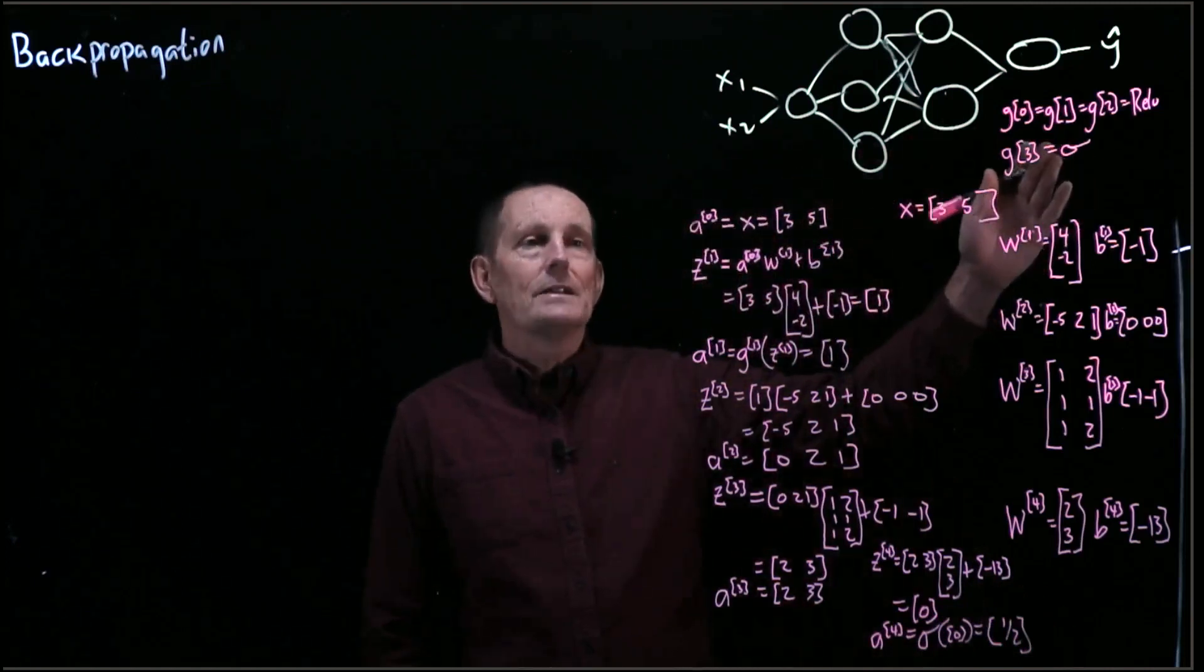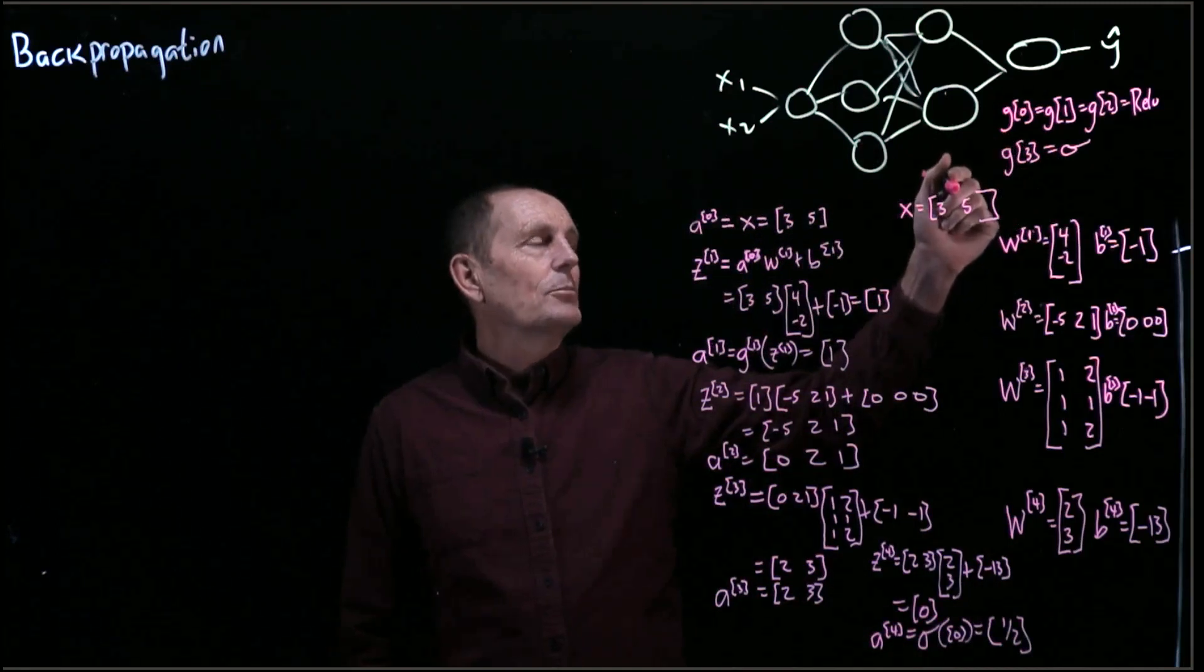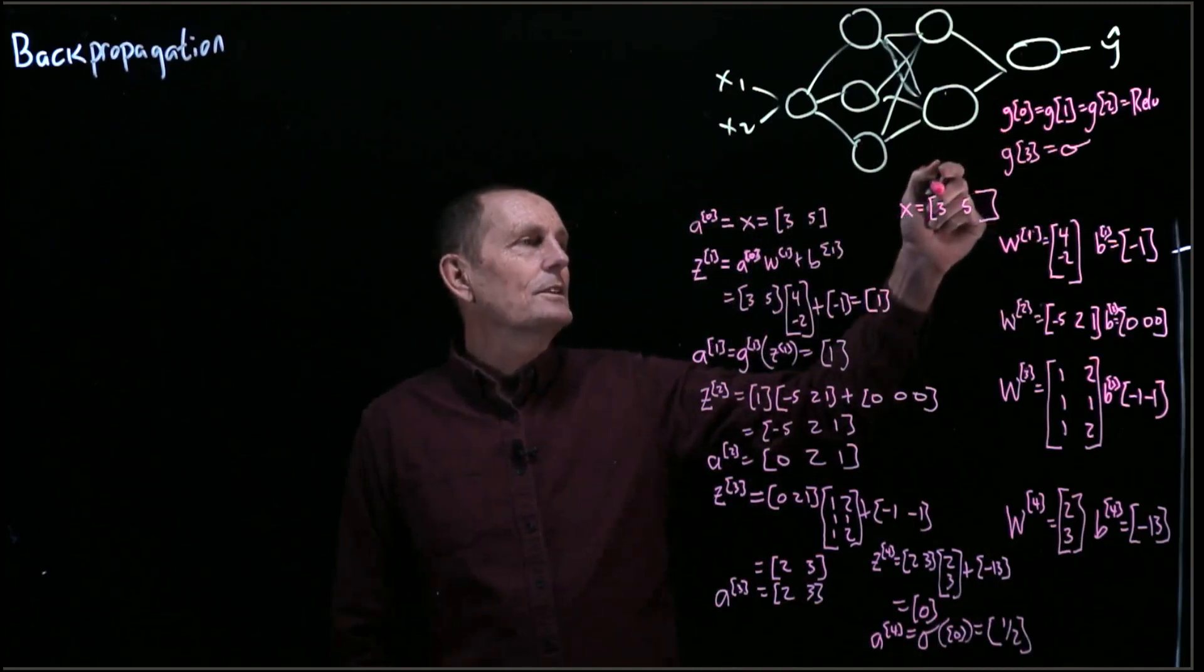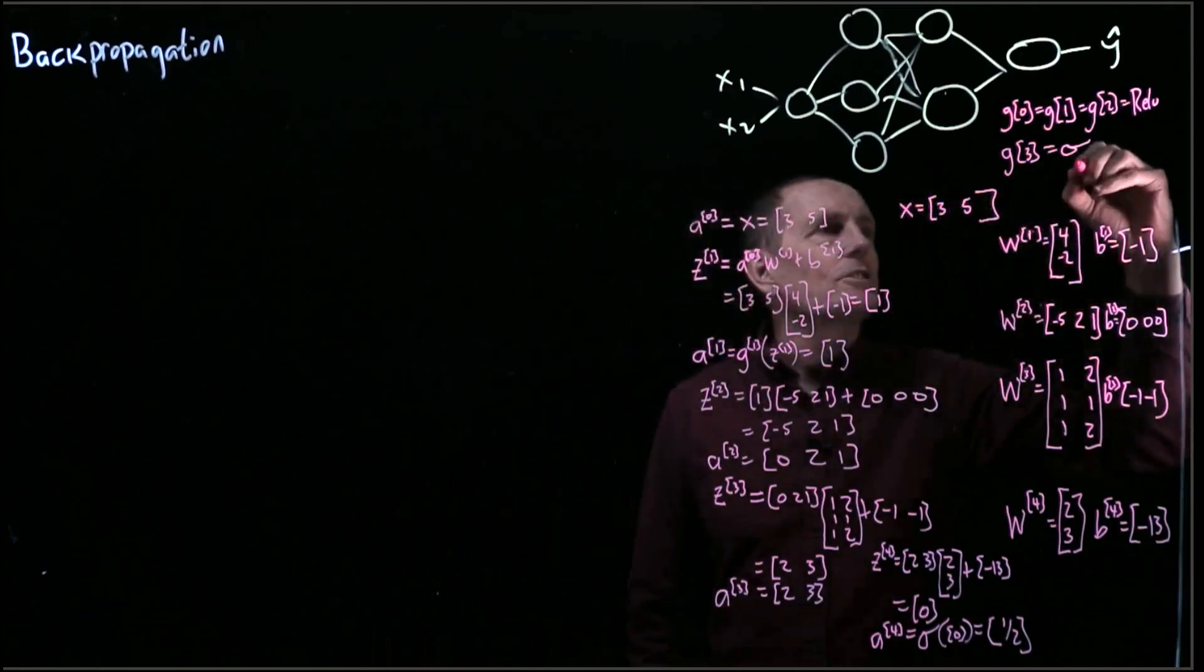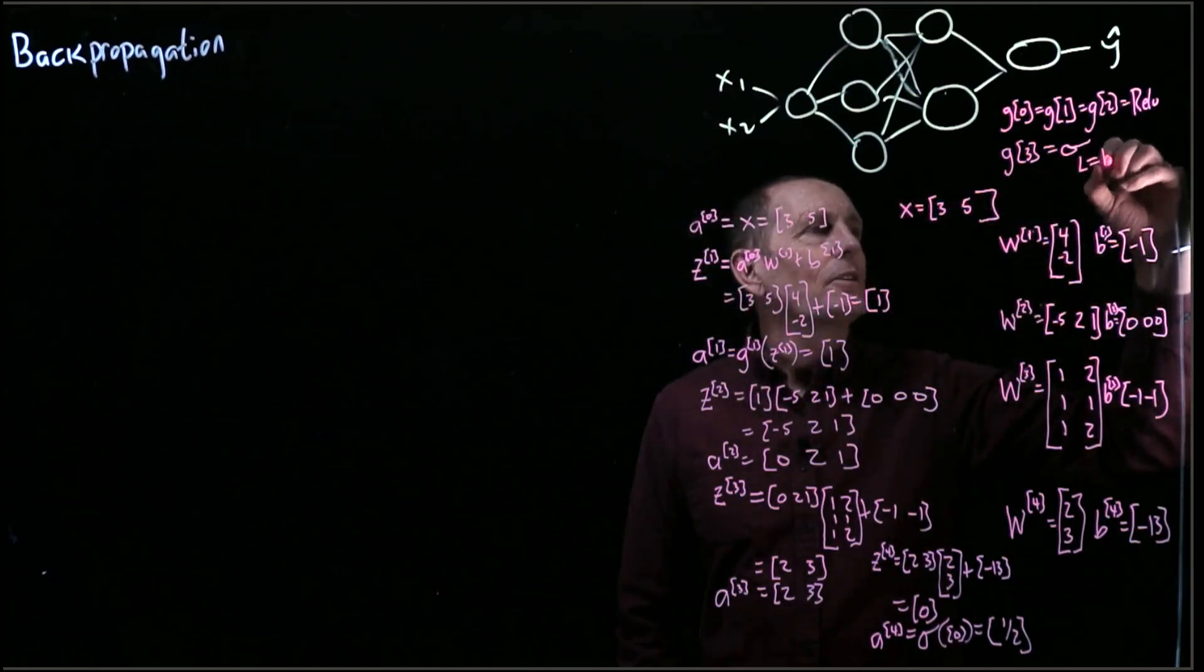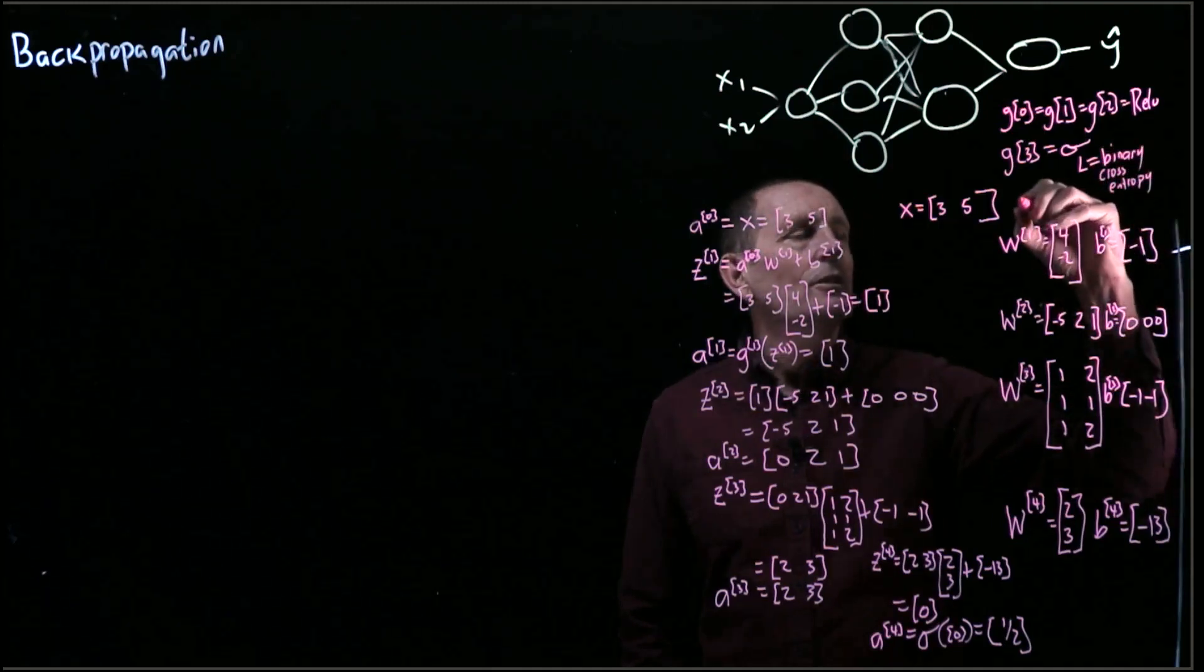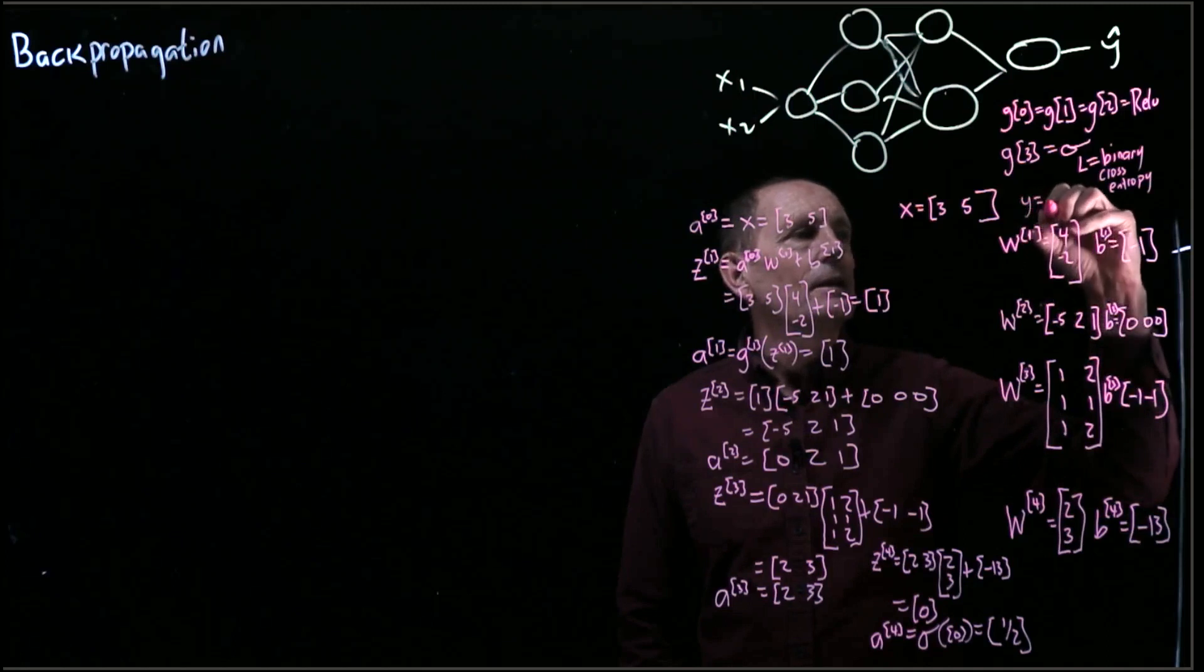So we've done all our forward paths. We should also point out in order to do this, what else do we need to know? We need to know that the loss function equals the binary cross entropy, and we also need to know that Y equals...